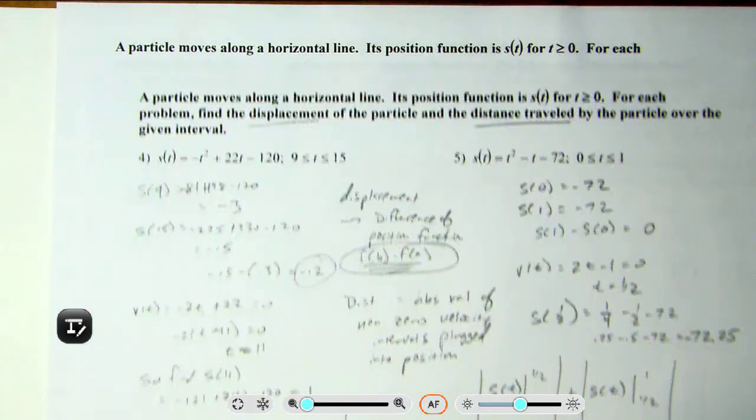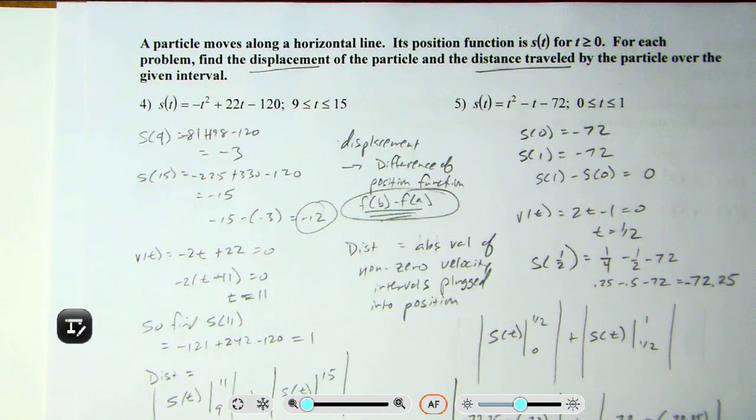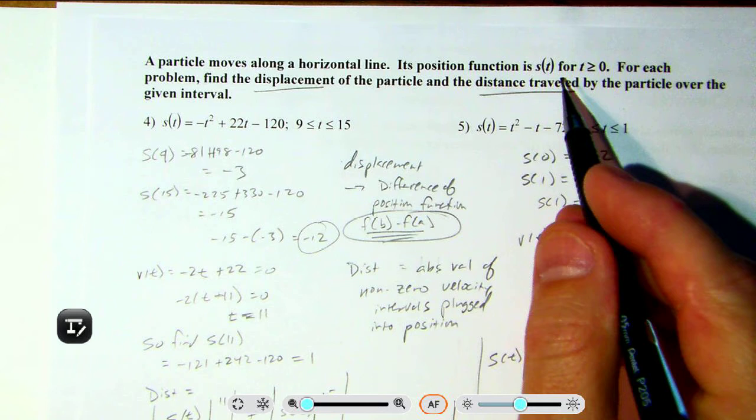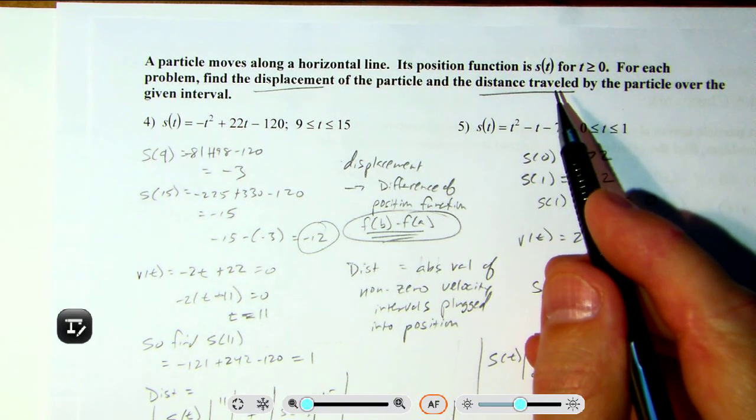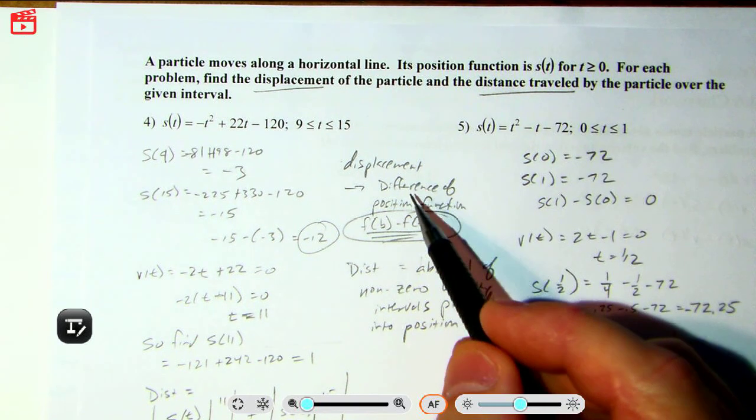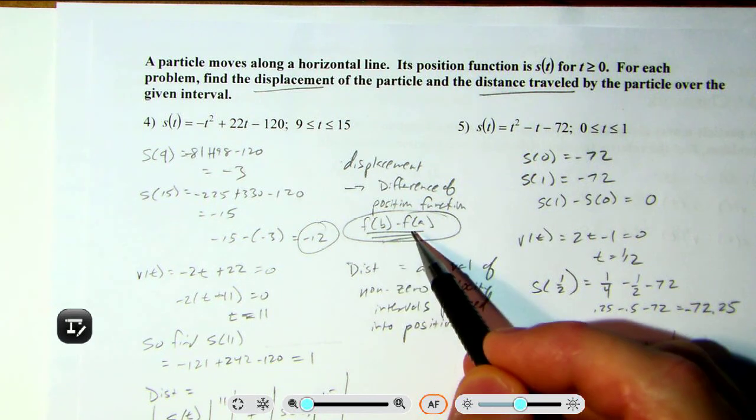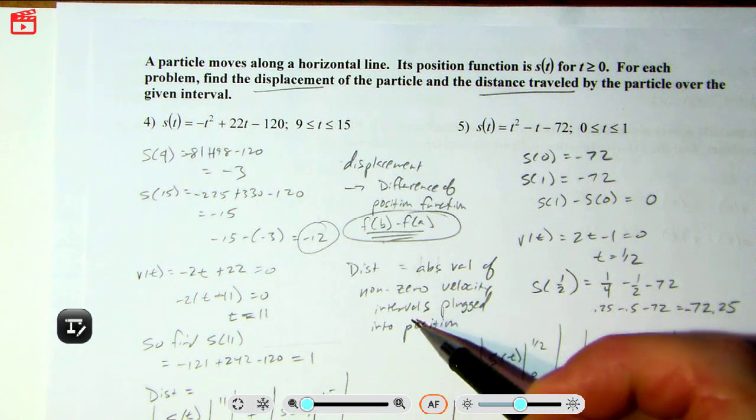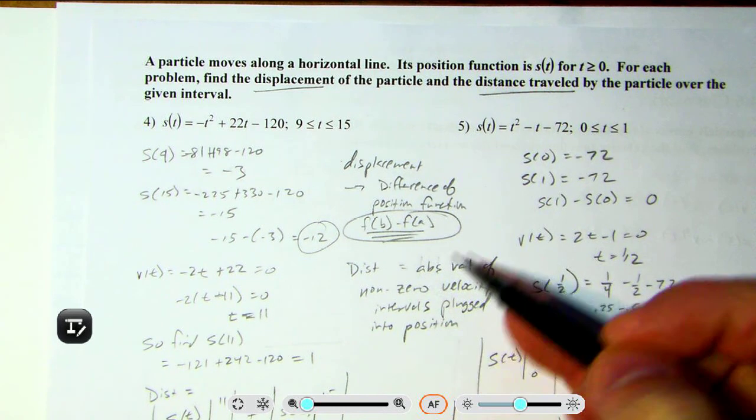Okay, what's going to really drive you nuts though is number four, five, and six. I'm going to explain number four in detail and then show you the answers for five and six. Okay, so it's going to give you the position function. It wants you to find displacement and then distance traveled. Remember, displacement is just going to be the difference of the position functions. It's kind of like f(b) minus f(a). Distance is going to be the absolute value of the nonzero velocity intervals.